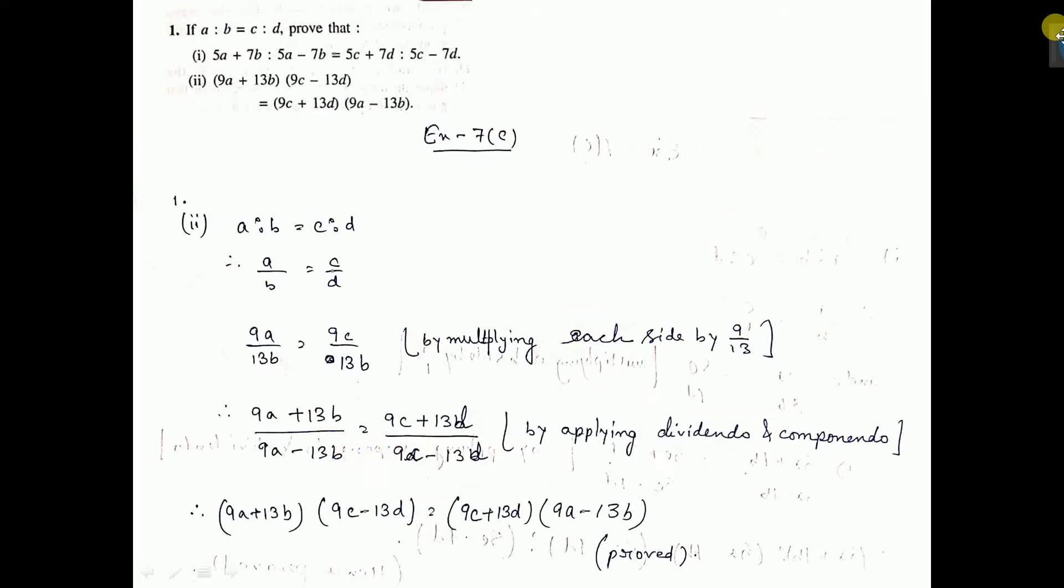I can do sum number 1 part 2, this sum. 9a plus 13b into 9c minus 13d equal to 9c plus 13d into 9a minus 13b.